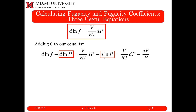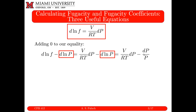Since d log P can be written as (1/P) dP, the DP term is common, and I can factor it out. This gives V/RT minus 1/P, and on the left-hand side I can use log rules to write d log(F/P). So the right-hand side becomes V/RT minus 1/P, or equivalently, factoring out 1/P, this is (PV/RT minus 1) times dP/P.